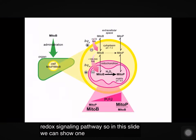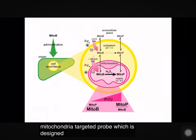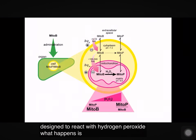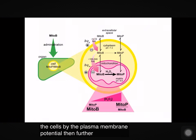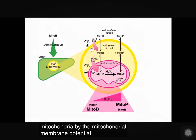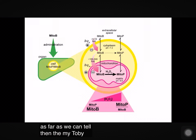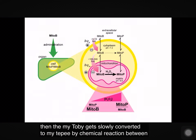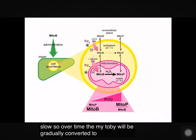One type of probe we have used is called MITOB. This is a mitochondria-targeted probe designed to react with hydrogen peroxide. You can administer it to an experimental animal, such as a fruit fly or a mouse, by injection. It gets drawn into cells by the plasma membrane potential, then further accumulated by mitochondria via the mitochondrial membrane potential. This huge accumulation means MITOB is effectively only present in mitochondria in the body. The MITOB then gets slowly converted to MITOBOL by a direct chemical reaction between part of the MITOB molecule and hydrogen peroxide — it doesn't require an enzyme, and it's relatively slow. So over time, MITOB will be gradually converted to MITOBOL.